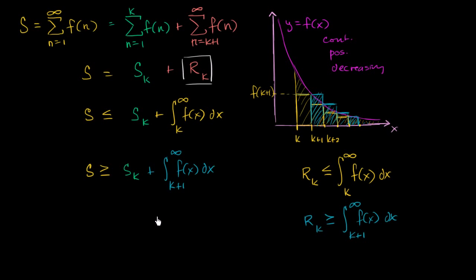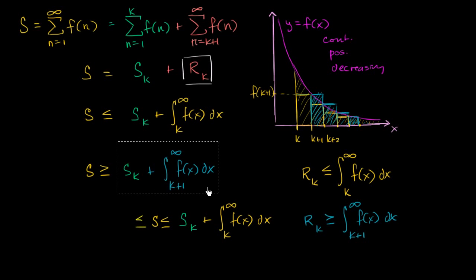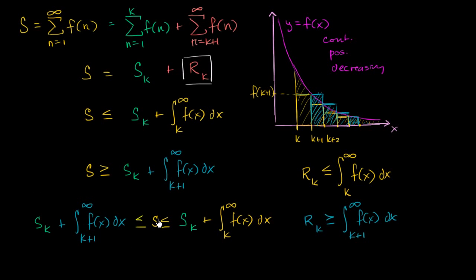Another way to write these two inequalities is as a compound inequality: S sub k plus the improper integral from k plus one to infinity of f(x) dx is less than or equal to S, which is less than or equal to S sub k plus the improper integral from k to infinity of f(x) dx. In the next series of videos we'll actually apply this, and we'll see that it's pretty straightforward even though it looks a little daunting right now.